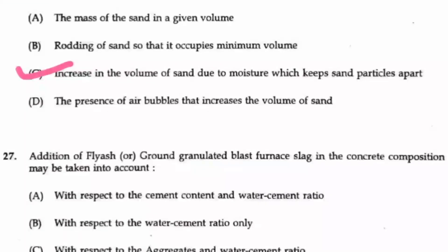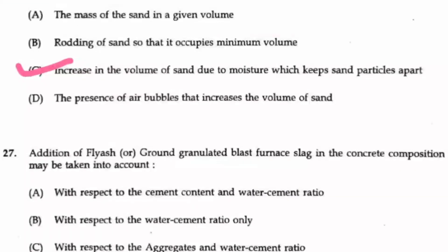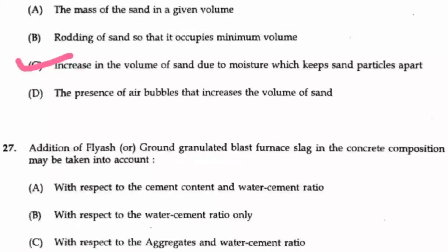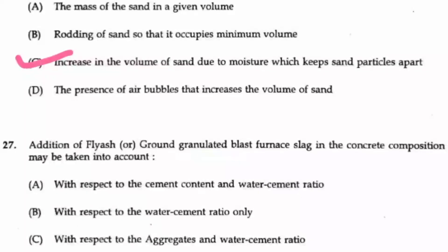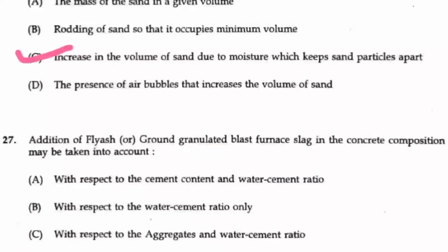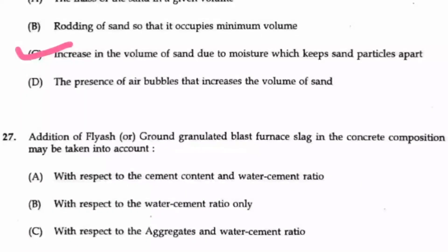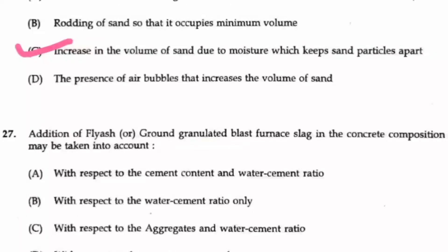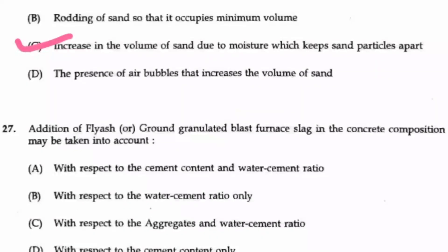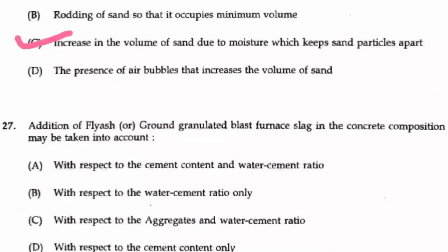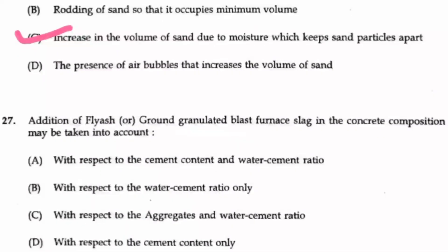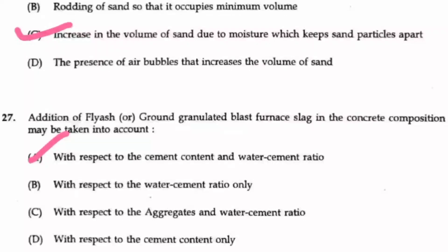27th question: addition of fly ash or ground granulated blast furnace slag in the concrete composition may be taken into account with respect to what? Various factors are given — cement content, water cement ratio, water cement ratio alone, aggregate and water cement ratio. If we want to add fly ash to the concrete, we should definitely know the cement content and also the water cement ratio, then only we can know the quantity of cement to be added, and with respect to that only we can allow the addition of fly ash instead of cement. So option A is the right answer.